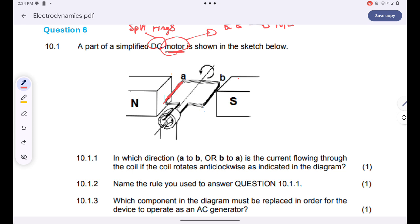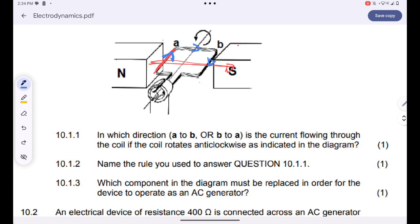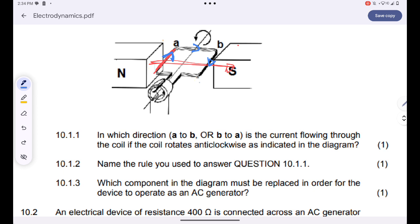My forefinger will be pointing from north to south, like this. And hence, the middle finger will be pointing in that direction over there. So this will be the flow of our current. Our current will simply flow like this. It will be consistent like that. So we can now conclude that the current will flow from A to B.